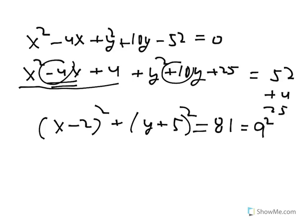And this would be, the graph would be a circle with center 2, negative 5 is the center and radius equals 9.